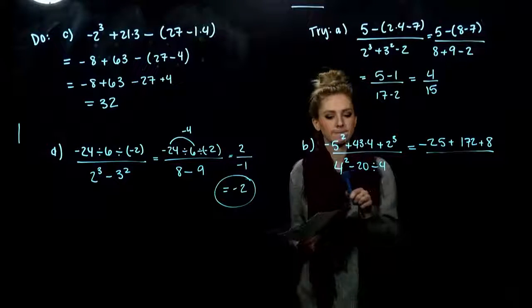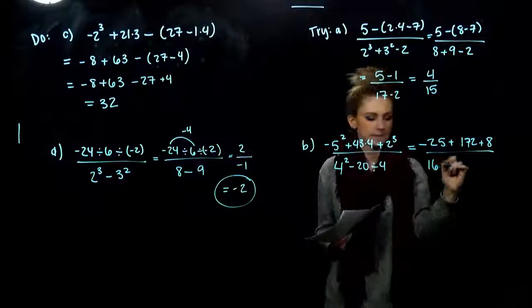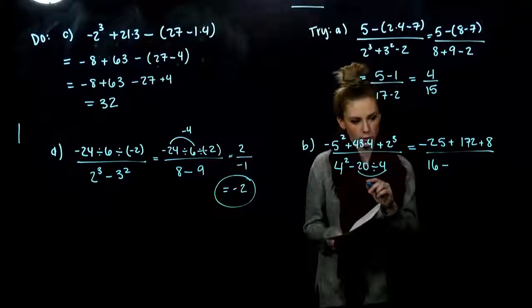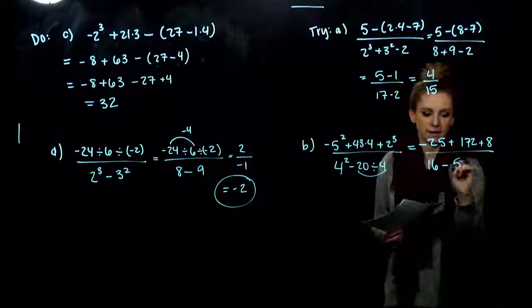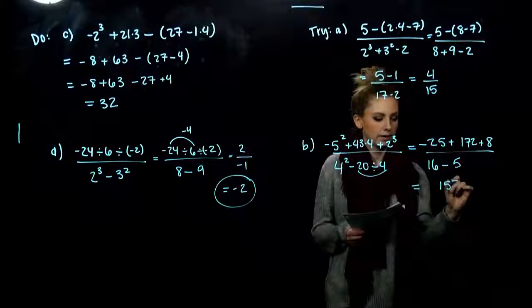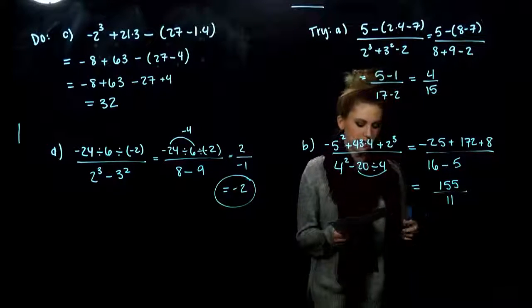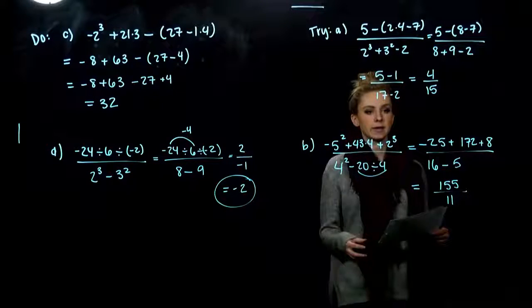4 squared is 16. And when am I subtracting off? I have to do this division first before I do the subtraction. So 20 divided by 4 will give me 5. So up top we're left with 155. And down below, 11. And again, we can't simplify any farther because they don't share anything in common that we can take out.